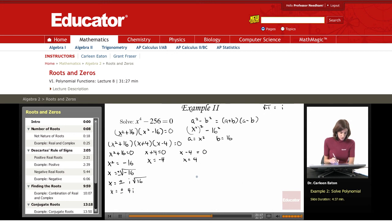So this gives me complex conjugate pair plus or minus 4i. So I have four solutions. x equals 4i, x equals negative 4i, x equals 4, and x equals negative 4.